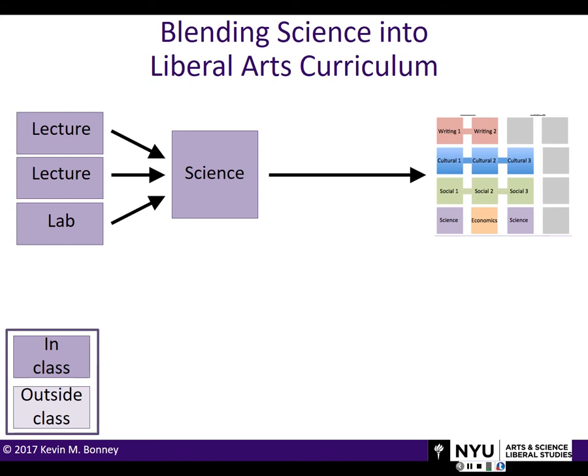One thing we did in order to integrate our courses was we had to cut some of our time, and what we lost was our lab time. But of course, having the lab component — having the students do hands-on work — is very important for learning science. So we had to re-engineer our science course.